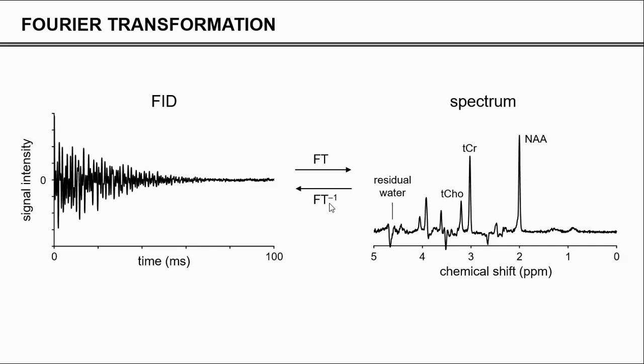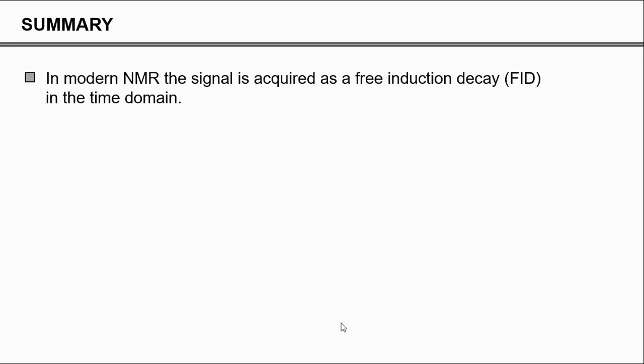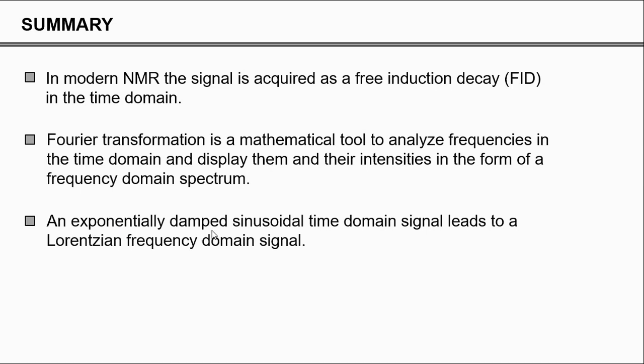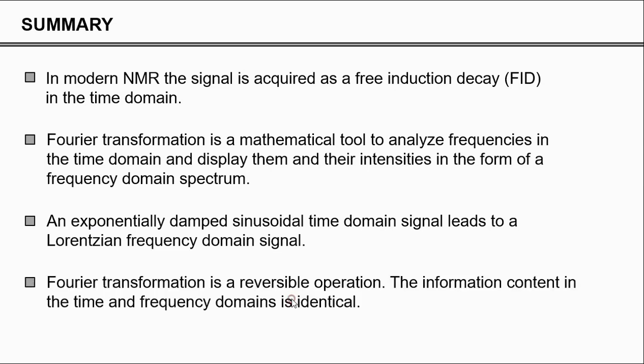Again, Fourier transformation is reversible, so there is nothing new in the spectrum that wasn't present in the FID already. Finally, in modern MR, the signal is always acquired as a free induction decay in the time domain. The Fourier transformation is a mathematical tool to analyze the frequencies in the time domain, and then display them and their intensities in the form of a frequency domain spectrum. If we have an exponentially damped sinusoidal signal in the time domain, we are going to get a Lorentzian frequency domain line shape. And the Fourier transformation is a reversible operation. The information content in the time and the frequency domain is identical.